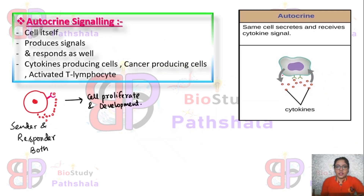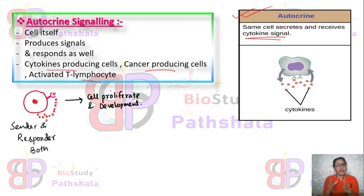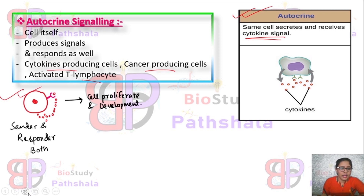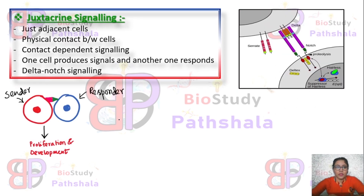Autocrine signaling, as you can see in this diagram, is shown by cytokine signaling in the immune system. Examples include cytokine-producing cells, cancer-producing cells, and activated T-lymphocytes. Here the cell acts on itself — it produces signals and responds by receiving those signals, showing proliferation as well as developmental programs.